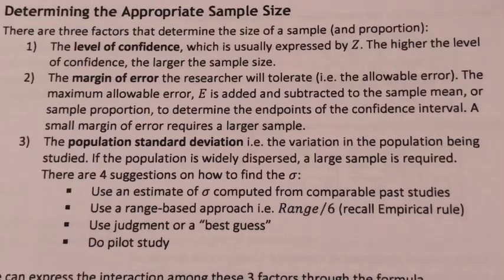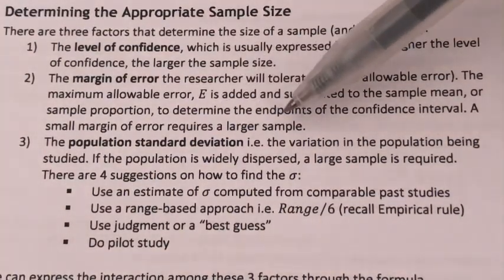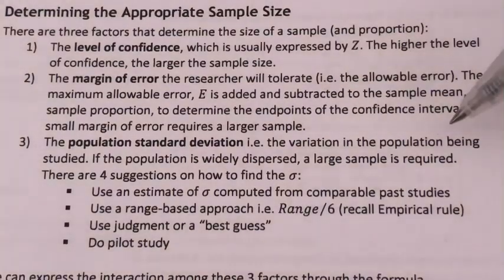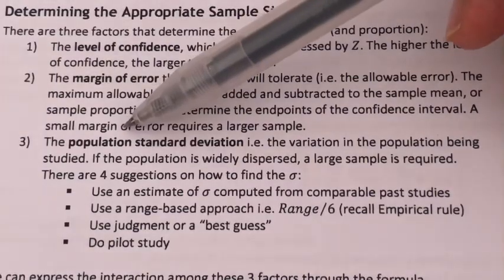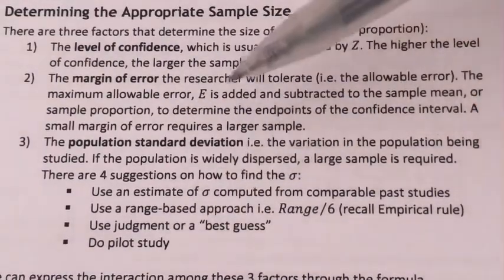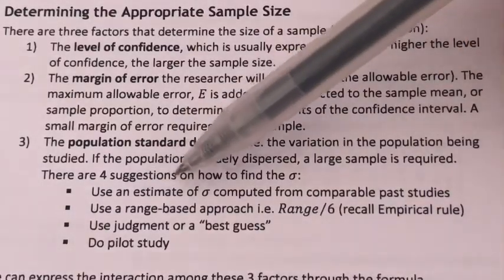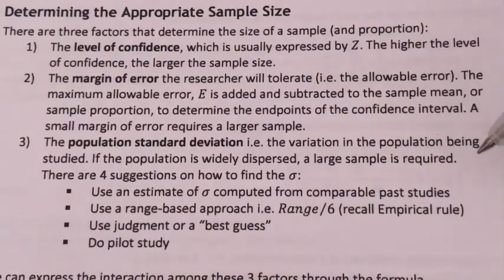The third factor to determine the appropriate sample size is the population standard deviation — that is, the width or the variation in the population being studied. Now, we know that sometimes we do not know what the population standard deviation is. Therefore, there are several ways for us to estimate or to find the sigma. First is to use an estimate of the sigma from past studies. In our case, we can always use the sample standard deviation, or S.